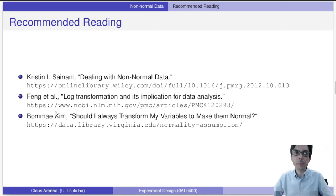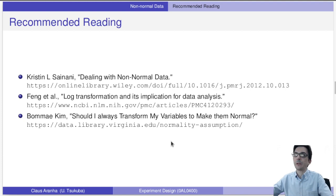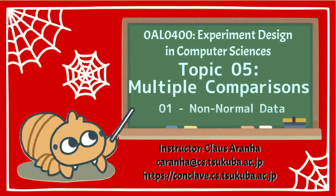For further learning, here are some recommended readings: a general overview of different ways to deal with non-normal data, a discussion of log transformation for data analysis, and an article on whether it's really necessary to transform data to achieve normality. These cover interesting discussions about when the normality assumption is violated. This ends the first video on non-normal data — next video we will discuss what to do when we have multiple samples to compare against each other.